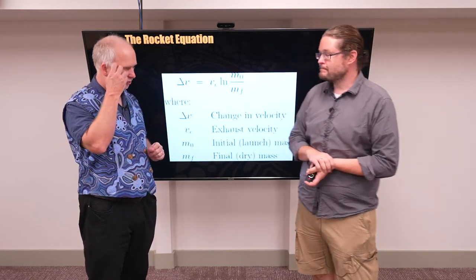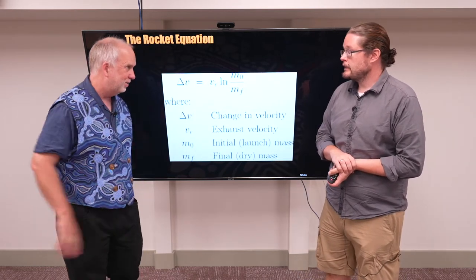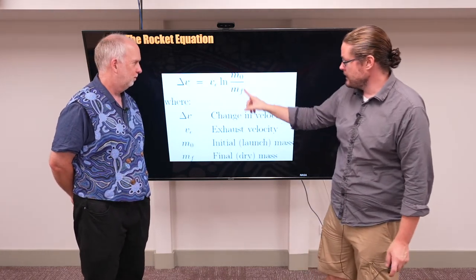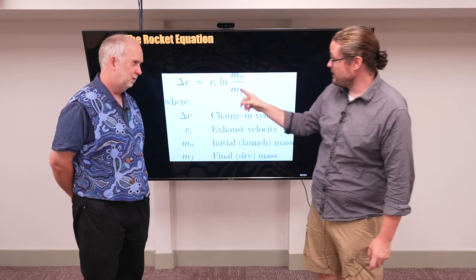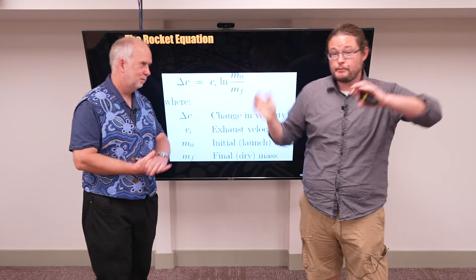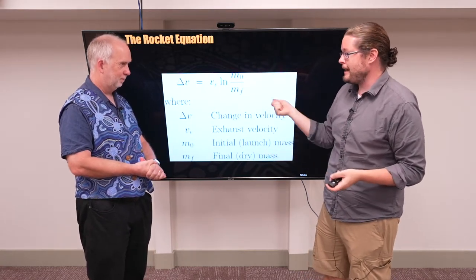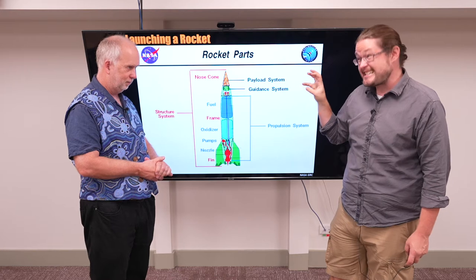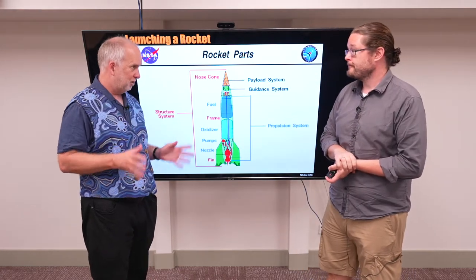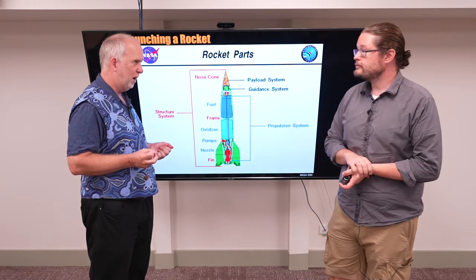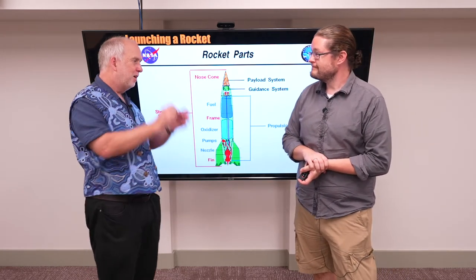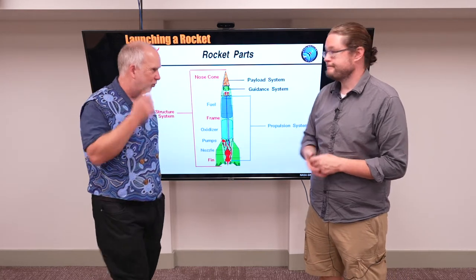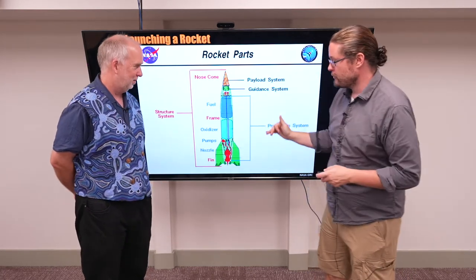Delta V — that's the Greek letter capital delta — is the change in velocity, and that determines where you can get to in space. It's all about maximizing this relative to mass. If we want a really fast speed, we need to adjust how much mass we carry. This is what governs space travel. Most of the rocket's weight is fuel, and fuel is what dictates the rocket equation.